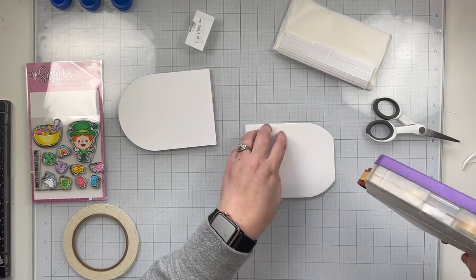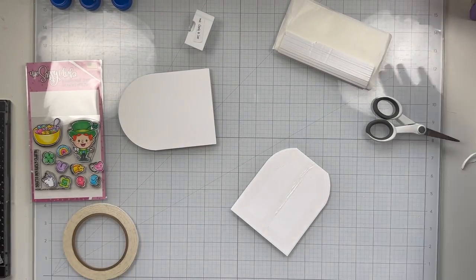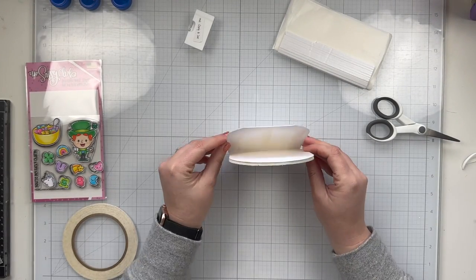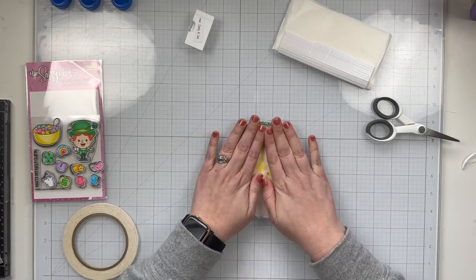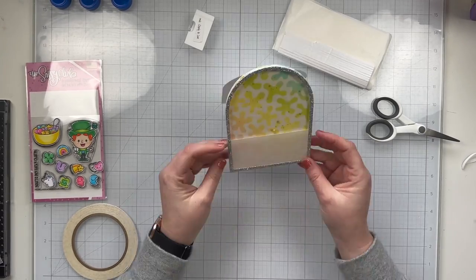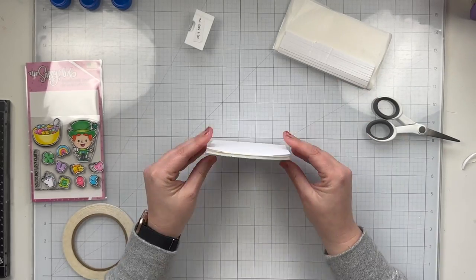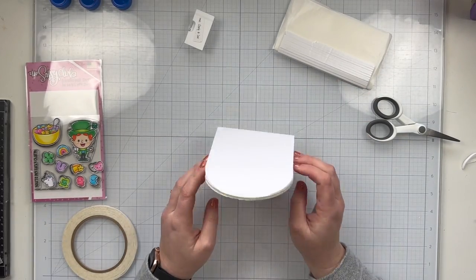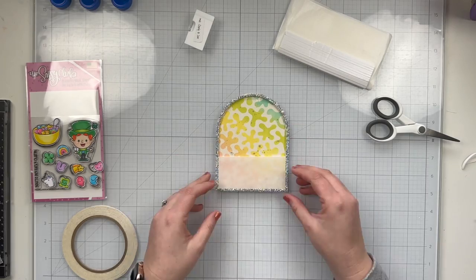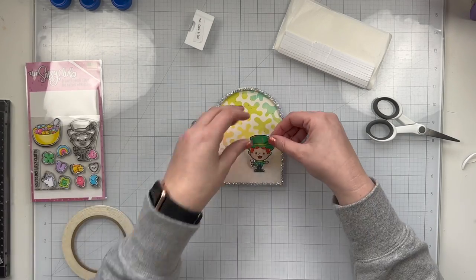So now I'm going to glue my shaker to my card base again my shaped card base using the same nested A2 dies and I'm just lining those up so that way it fits perfectly and you can see that the fold is there for the top folding card. I'm shaking my shaker to make sure none of my sequins are flying out and I don't have any issues with my card.